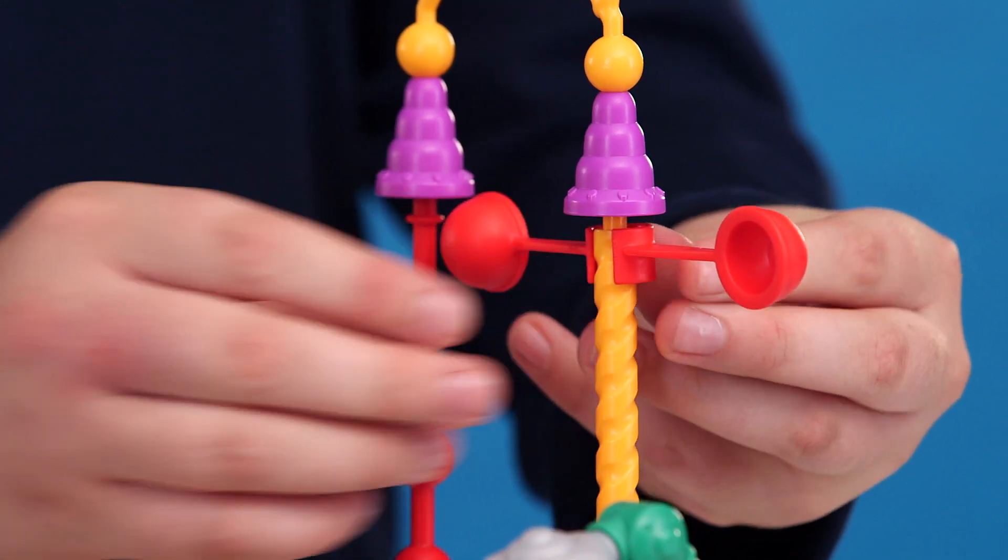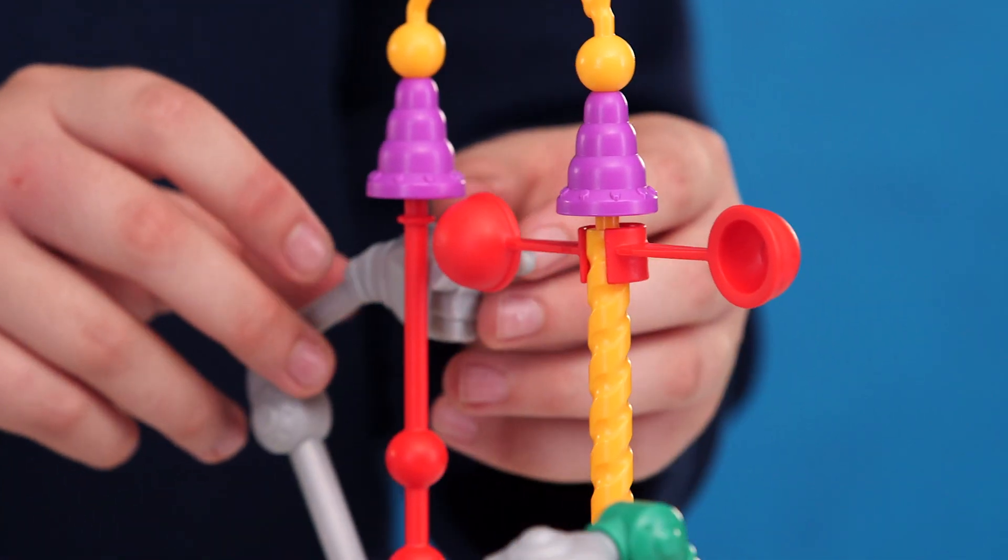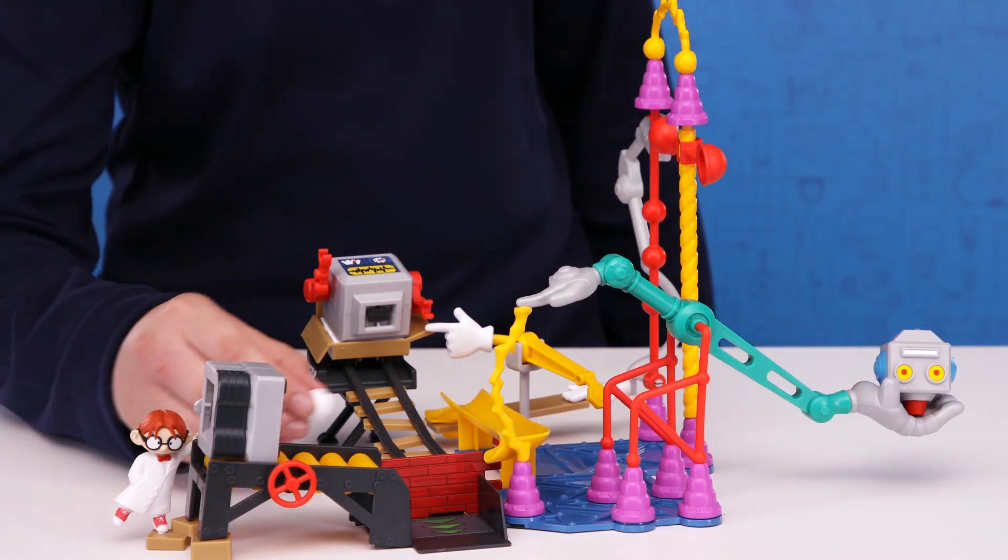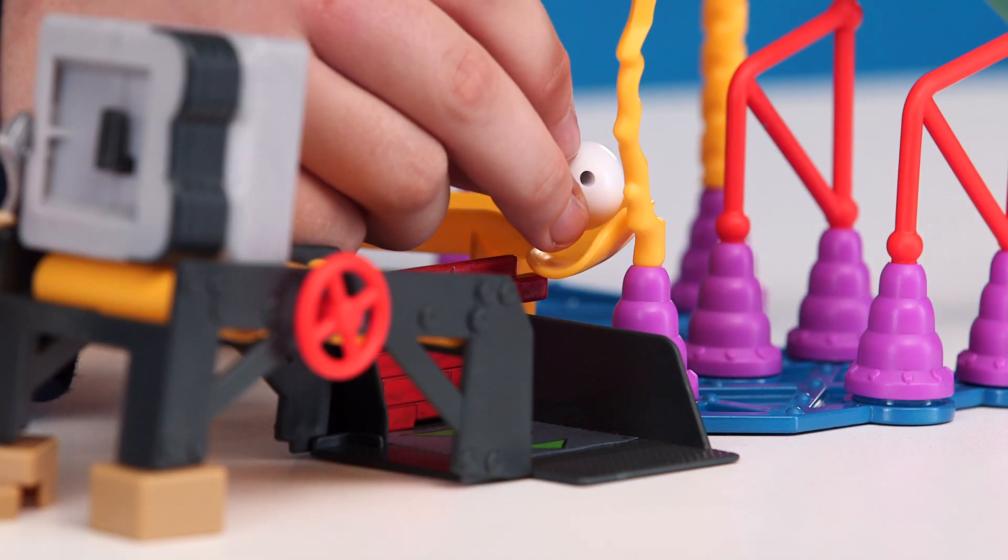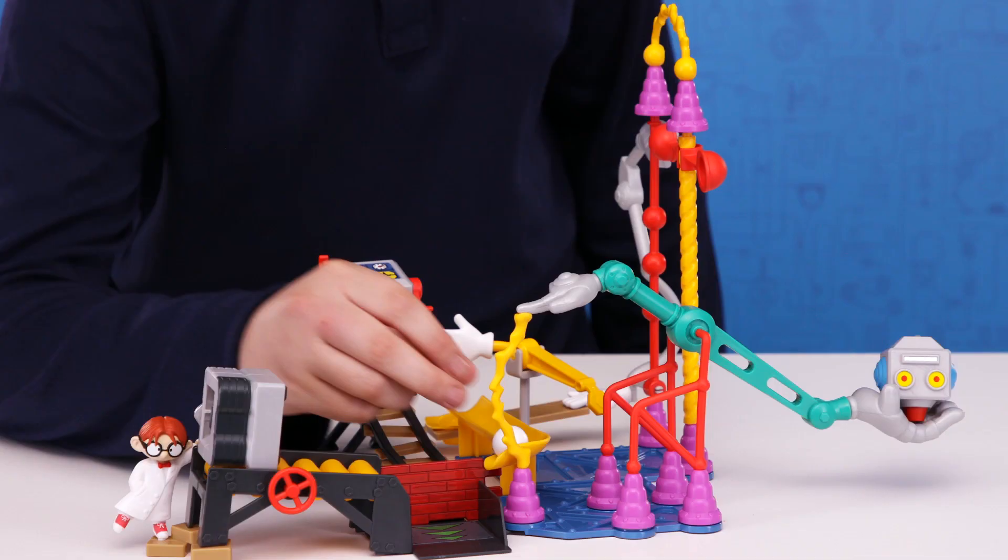Attach the spinner to the top of the yellow spinner track. Lift the helping hand to the spinner. Place the white bowling ball onto the yellow slide and we are ready to try this.